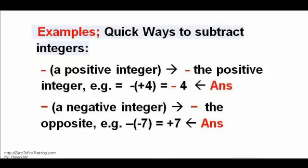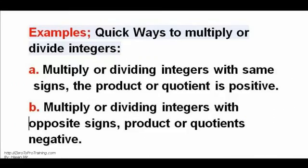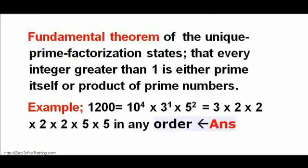Continuing subtraction rules: a minus sign applied to the opposite gives a positive result. For multiplication and division: integers with the same sign give a positive result; integers with opposite signs give a negative result.